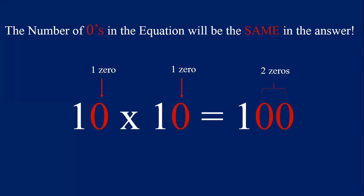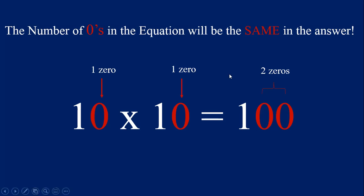In mental math, many times it's just a lot faster to move left to right instead of working right to left, which you are probably used to in the traditional way of solving equations — starting in the ones place and moving left. For this strategy, we are going to multiply the numbers that are not zero first, working left to right, then count the zeros in the equation and write that same amount of zeros after the first answer. So let's look at 10 times 10.